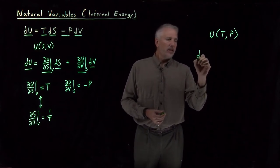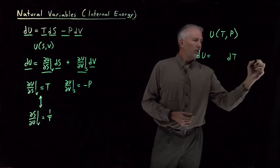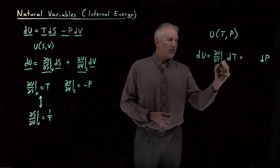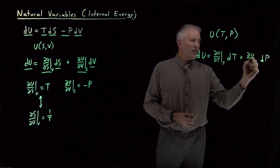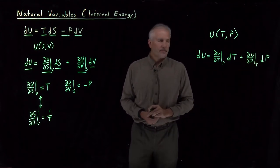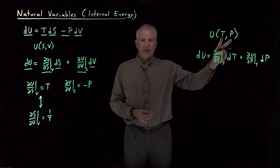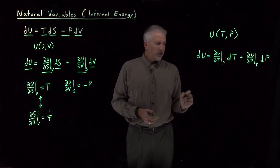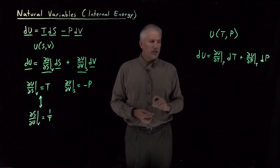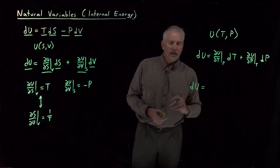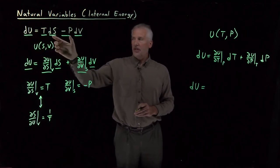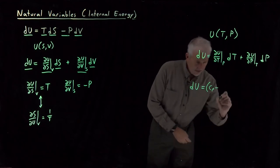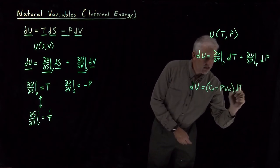Let's think about how the energy changes as a function of T and P rather than S and V. Using the same approach, the total differential of u equals (∂u/∂T) at constant P times dT, plus (∂u/∂P) at constant T times dP. That expression is fine — I can write u as a function of any variables I want. But the question becomes: what's the equivalent of the fundamental equation? I'll give a preview: the resulting expression turns out to be much less convenient.